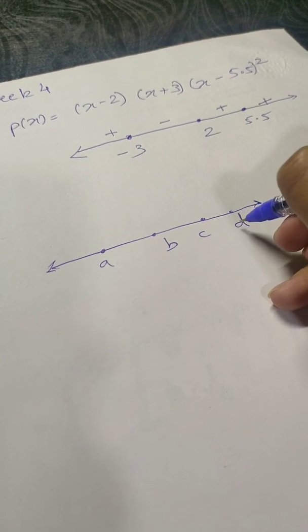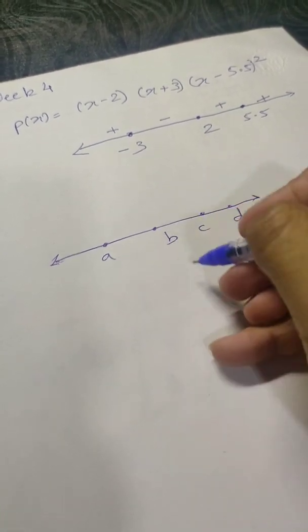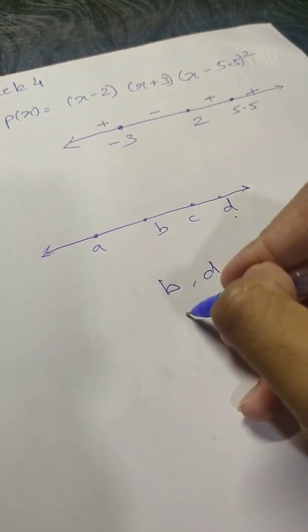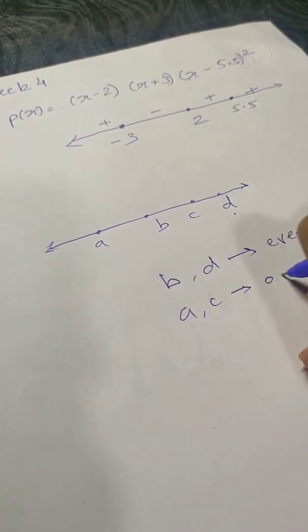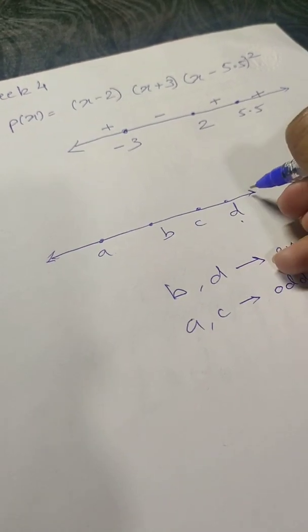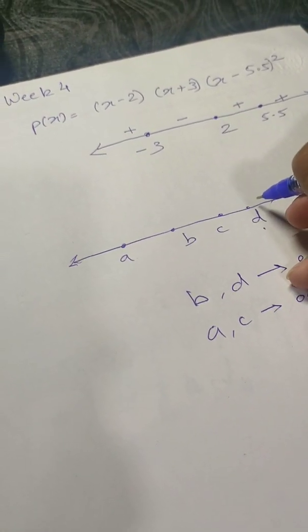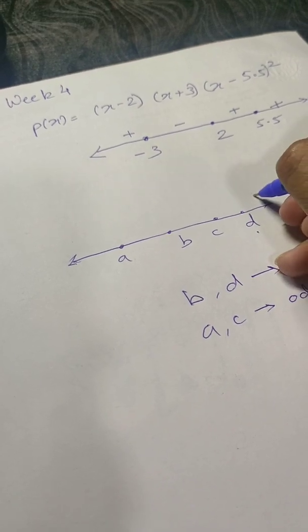And the multiplicity of, let's say, b and d are even, and a and c are odd. If we find something, let's just say for this time, values greater than d will give us positive values for the polynomial.